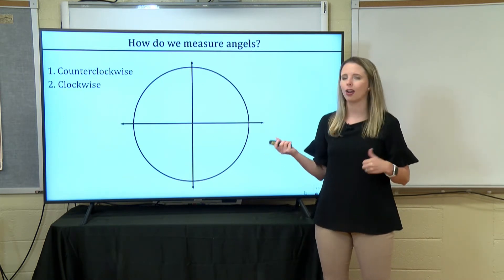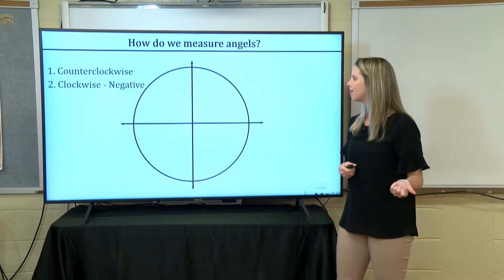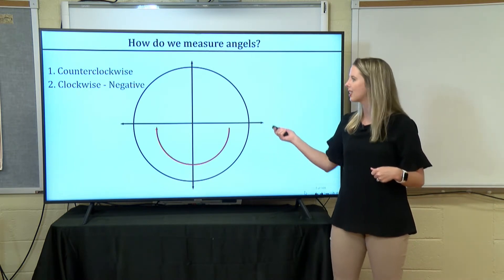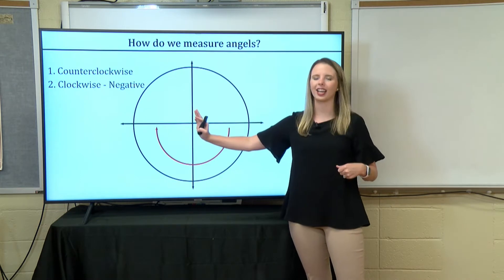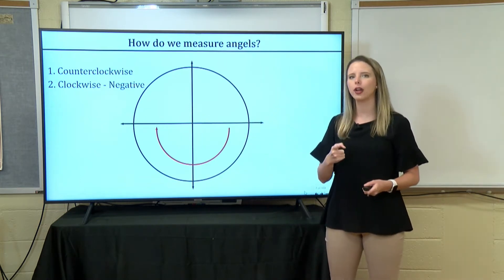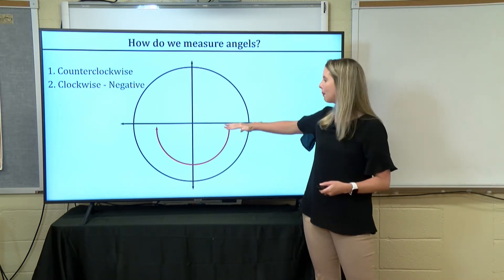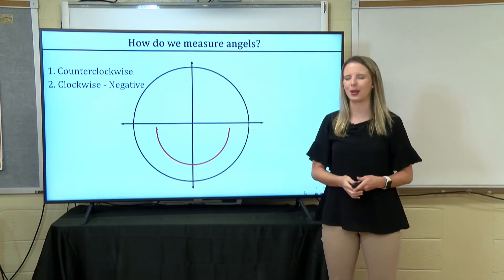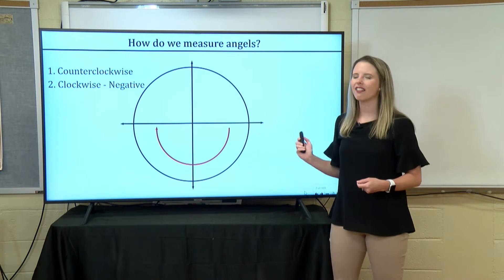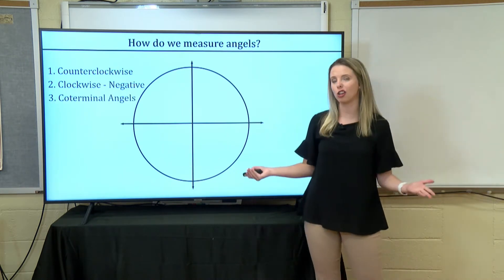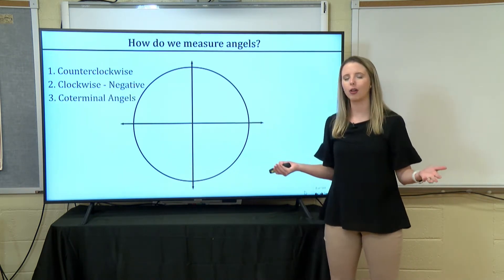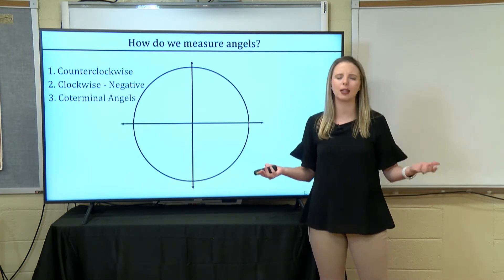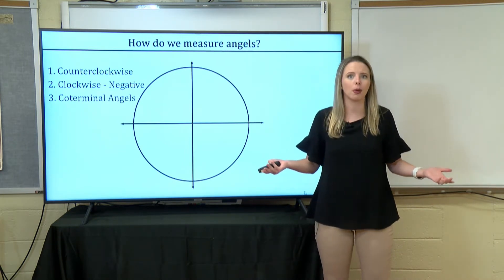What if we measure angles clockwise? That means we're going to have a negative angle — we're going to start with the x-axis and go clockwise. Both times we started with the positive x-axis; that's always going to be our starting point. And then we have a thing called coterminal angles — two angles that are in the same position, just represented with different angle measures.